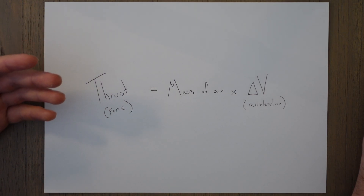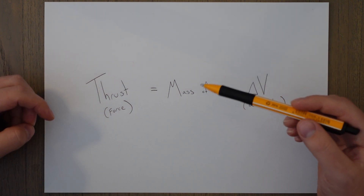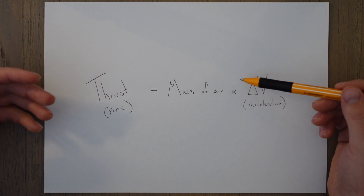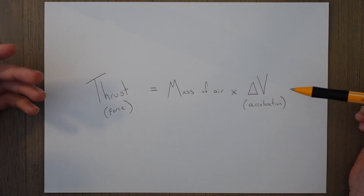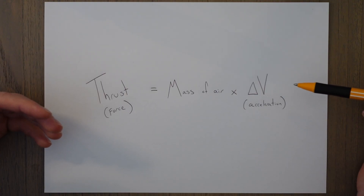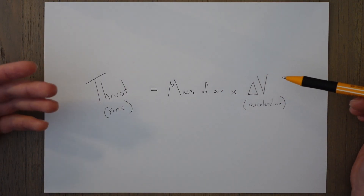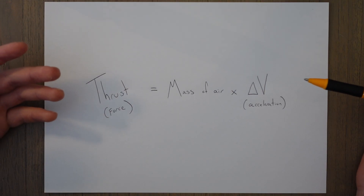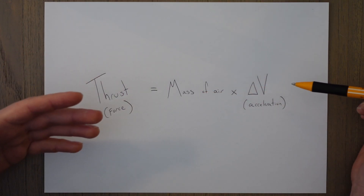The amount of thrust produced by the engine depends on two things: the mass of the air being accelerated and the level it is being accelerated. So we can either accelerate a lot of air a small amount, or we can accelerate a small amount of air a lot and increase its speed a lot. In reality a jet engine will do a bit of both.